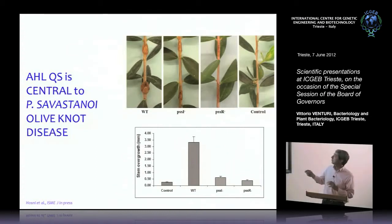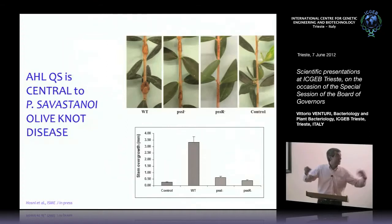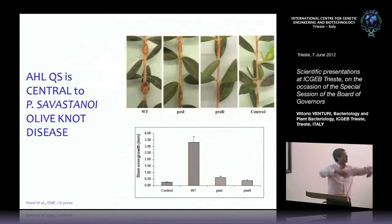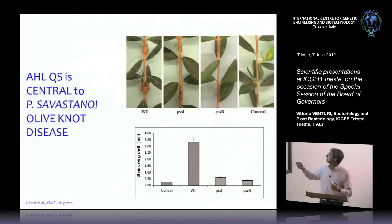When we inactivate this bacterial language — when the bacteria can no longer communicate with itself — these 60-day-old olive plants infected with the wild type show a nice tumor, but when we remove signaling and use bacteria that cannot produce the signal, they are no longer able to make the tumor.